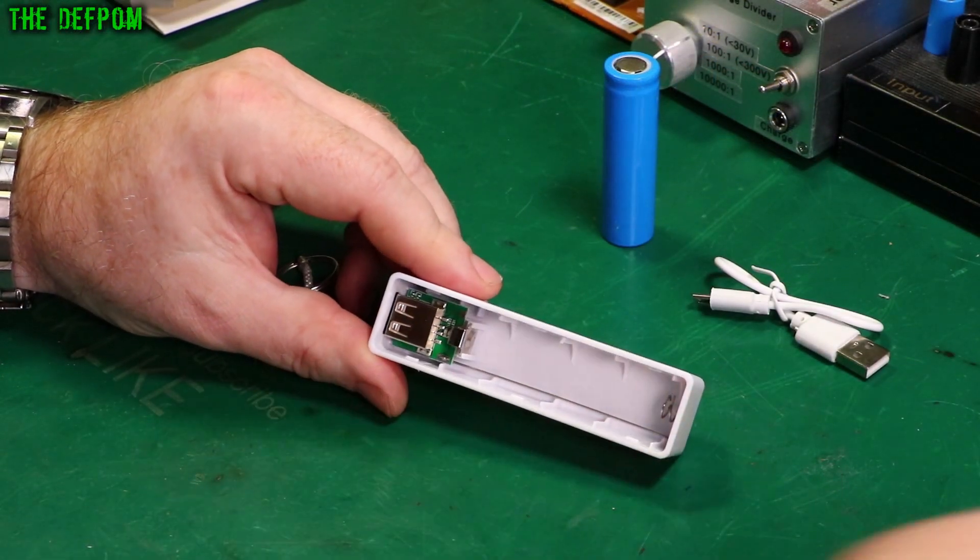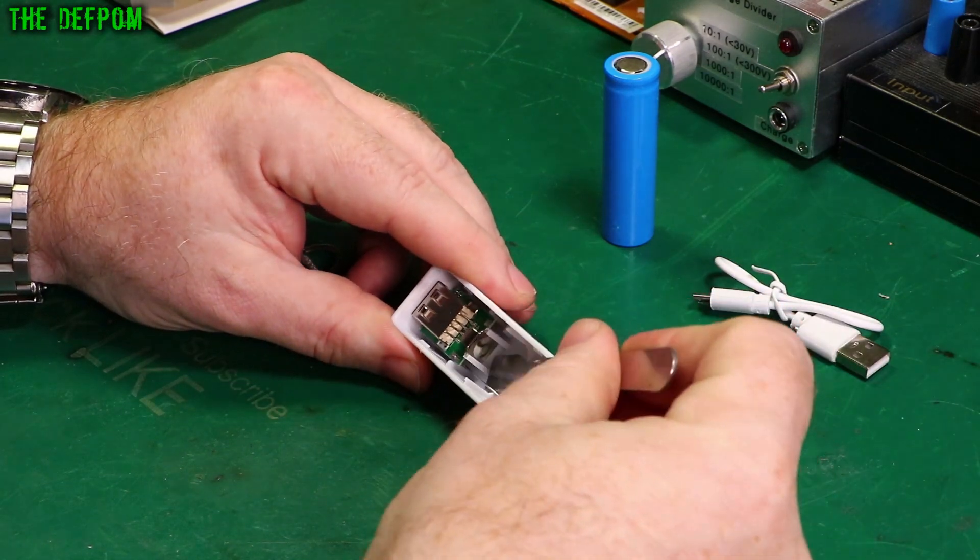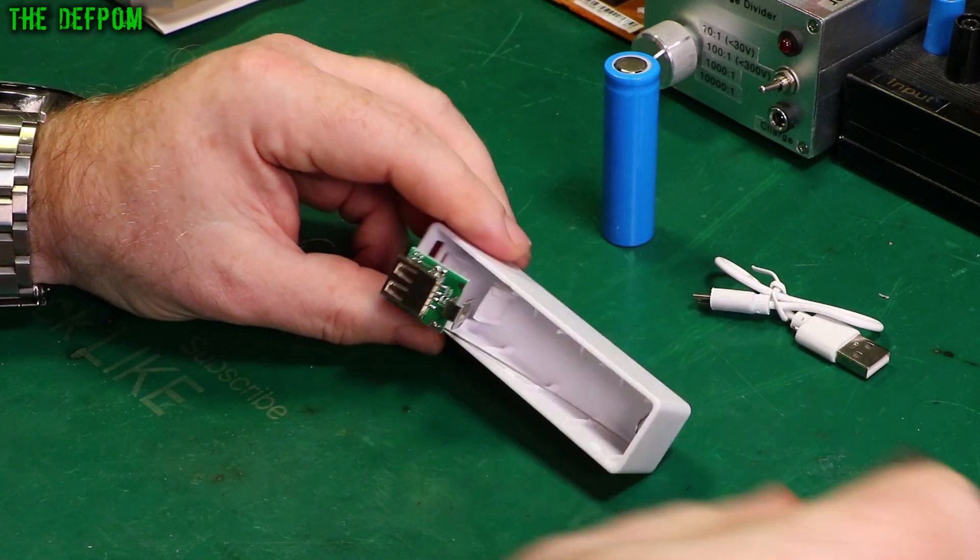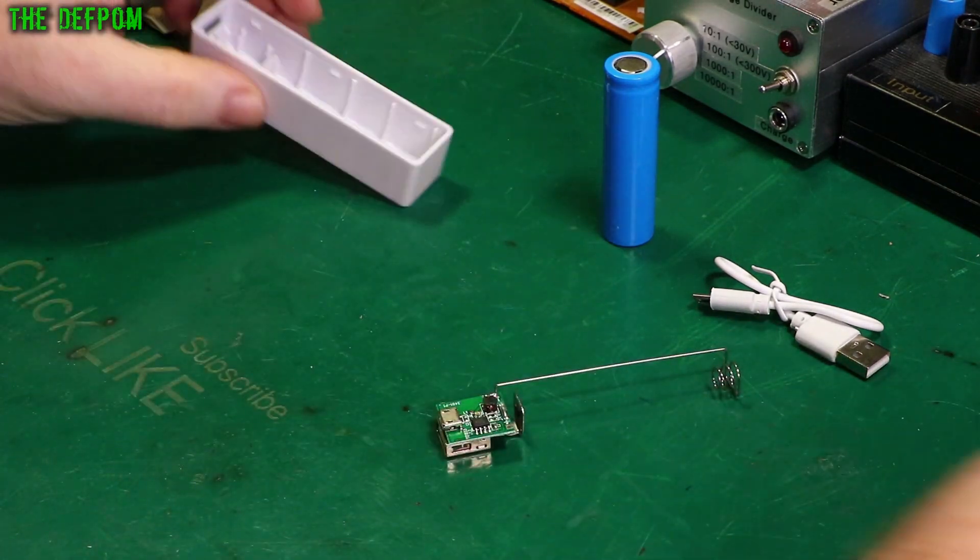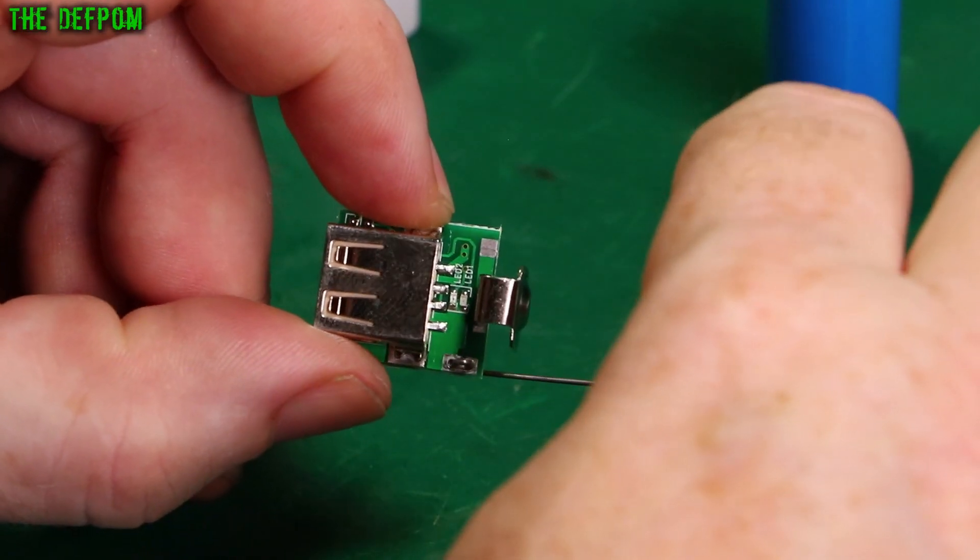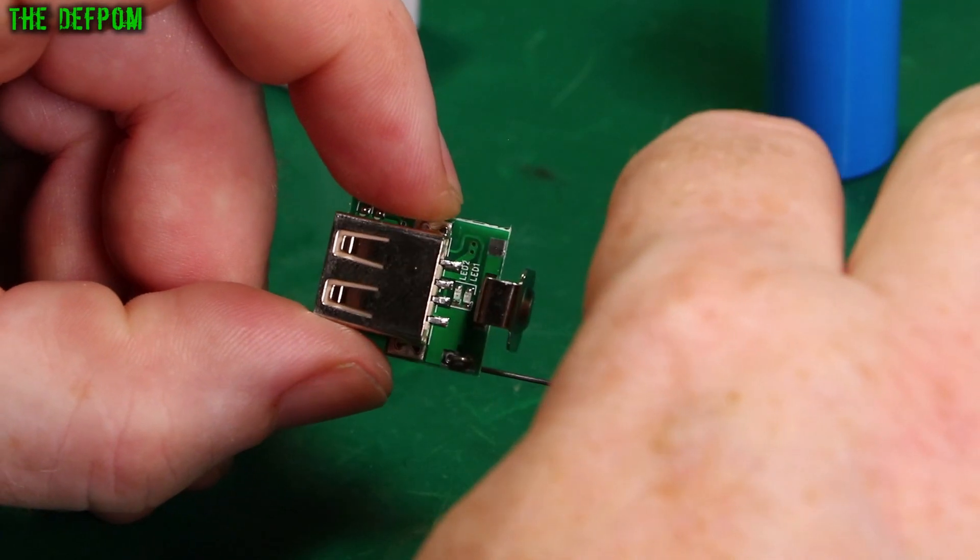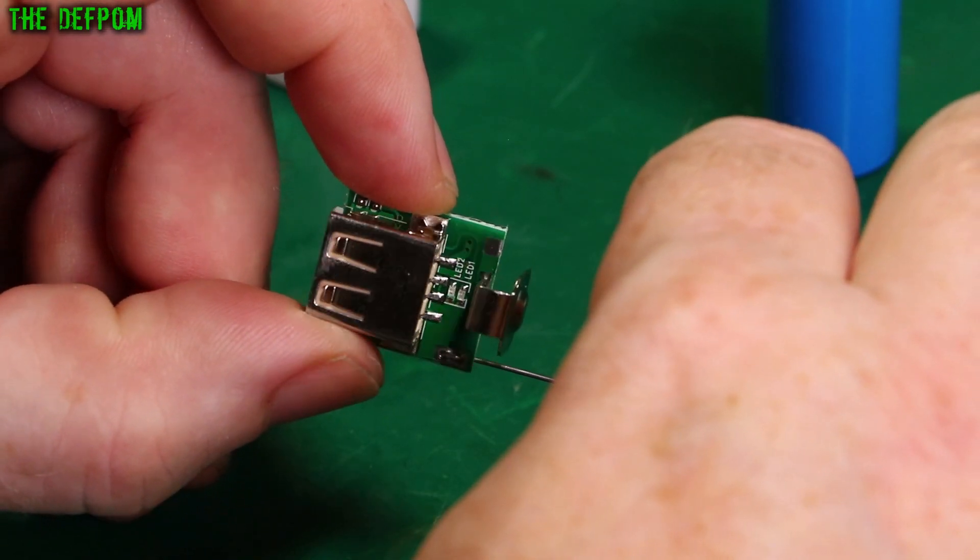Looks like it just slots in, let's try pulling that out and see how we go. Just lever this up, there we go, look at that. I need to get the other end out as well. So we've got two LEDs there, which would probably be like a charging and on state or something.